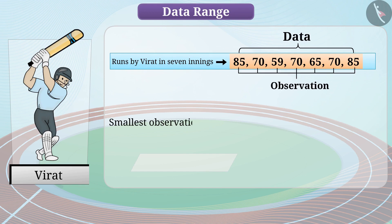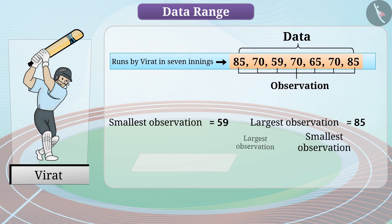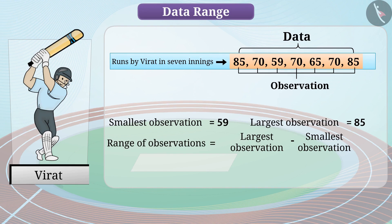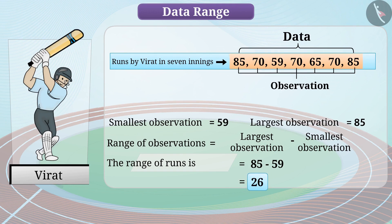The smallest observation in the data provided is 59 and the largest observation is 85. If we subtract the smallest observation from the largest observation, this gives us the range. The range of runs is 85 minus 59, which equals 26. The range of data provides us with information such as the extension of data is from 59 to 85.